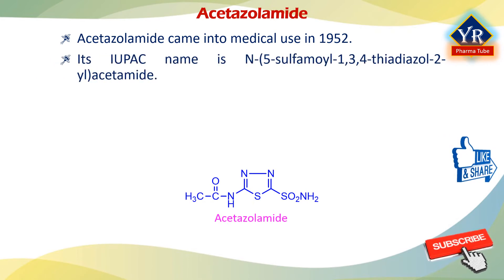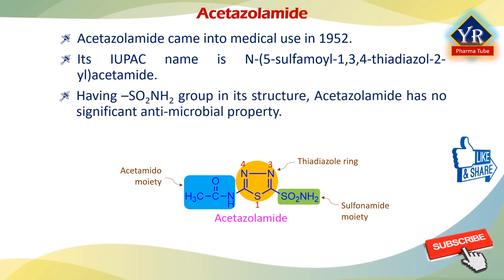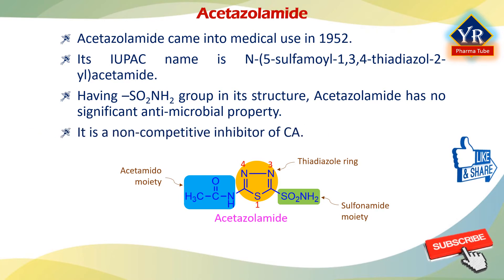Its IUPAC name is N-(5-sulfamoyl-1,3,4-thiadiazol-2-yl)acetamide. It is both a thiadiazole derivative and a sulfonamide derivative with diuretic, anti-glaucoma, and anticonvulsant properties. Having a sulfonamide group in its structure, however, it does not have any clinically significant antimicrobial property. It is a non-competitive inhibitor of carbonic anhydrase enzyme.